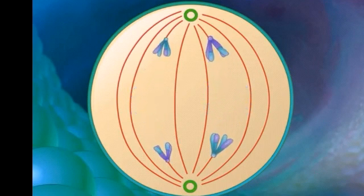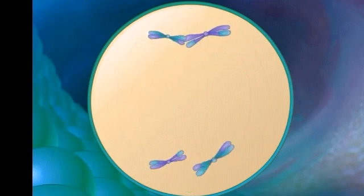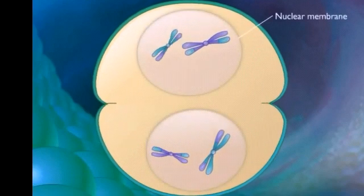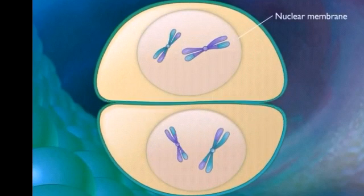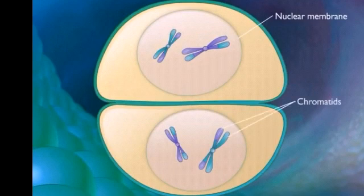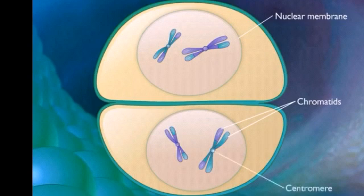After this happens, the nuclear membrane slowly starts appearing back. The nuclear membrane will form, but though the nuclear membrane forms, the sister chromatids or the two chromosomes in the nucleus are not same, they're not identical. Therefore, they have to be further divided.